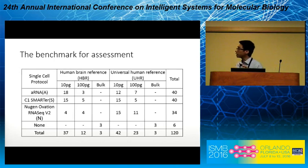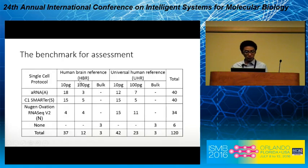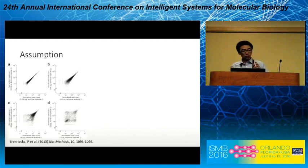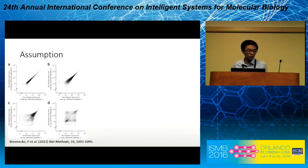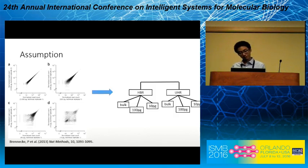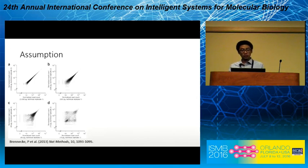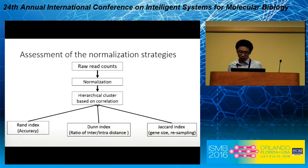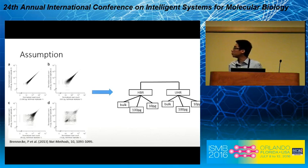Here we collect data from SCAP-T, where they measure a total of 120 single cells from two reference RNAs: HBR and UHR, at several different quantities. According to this paper, published in the 2003 Nature Methods, we find that the data will cluster — the correlation will be high for the bulk data and smaller for the 10 picogram data. So we assume that the data will first be clustered according to the amount, then according to the reference RNA used. We take this as a gold standard.